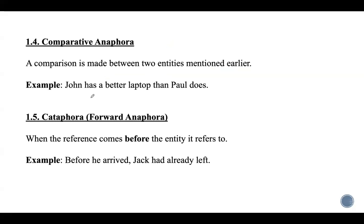Comparative anaphora is where a comparison is made between two entities mentioned earlier. For example, 'John has a better laptop than Paul does,' where 'does' refers to 'has a laptop.' Then there is cataphora, also called forward anaphora, where the reference comes before the entity it refers to. For example, 'Before he arrived, Jack had already left' — here 'he' refers to Jack, which appears later in the sentence.